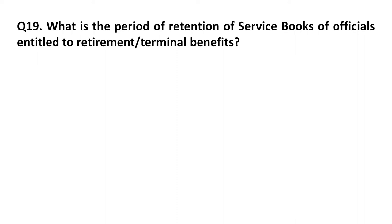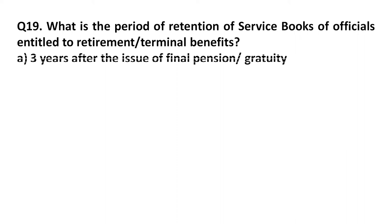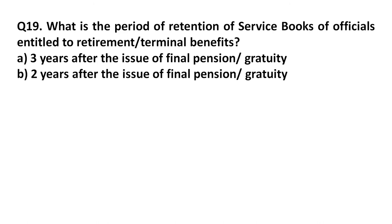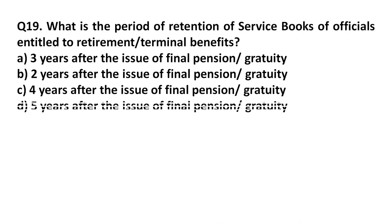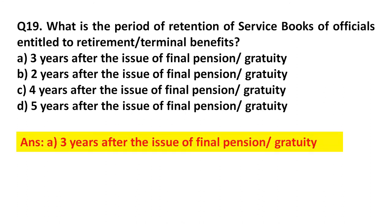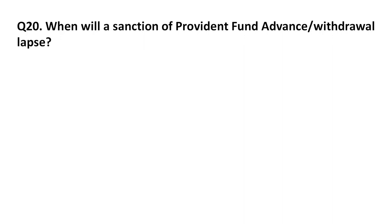Question 19: What is the period of retention of the service book of an official entitled to retirement terminal benefits? Option A: Three years after the issue of final pension orders. Option B: Two years after the issue of final pension orders. Option C: Four years after the issue of final pension orders. Option D: Five years after the issue of final pension orders. Answer: Three years after the issue of final pension orders.